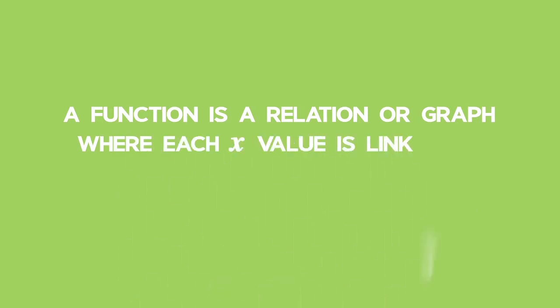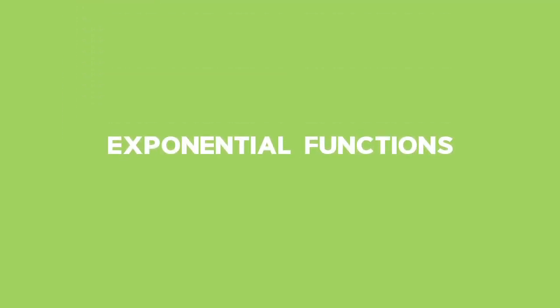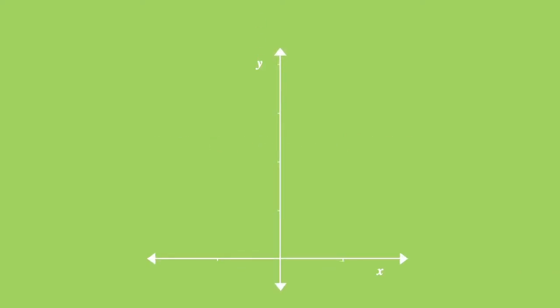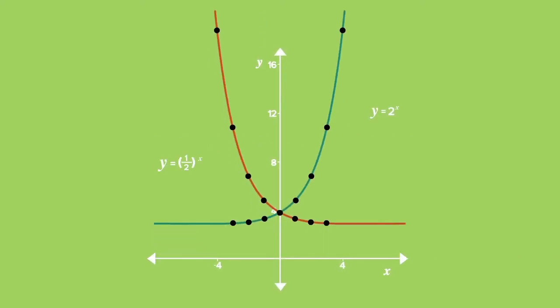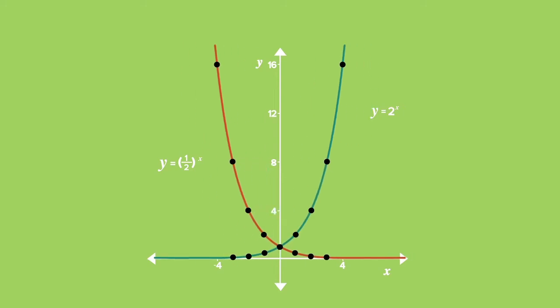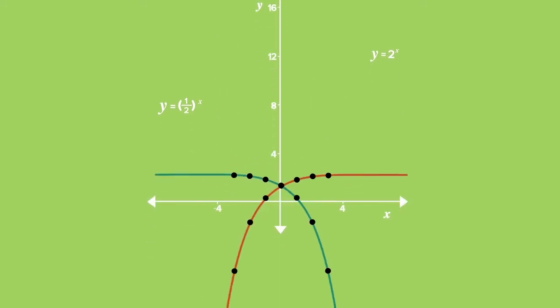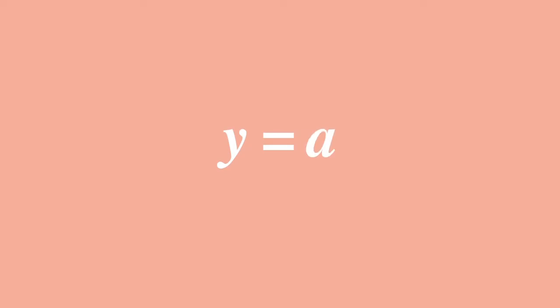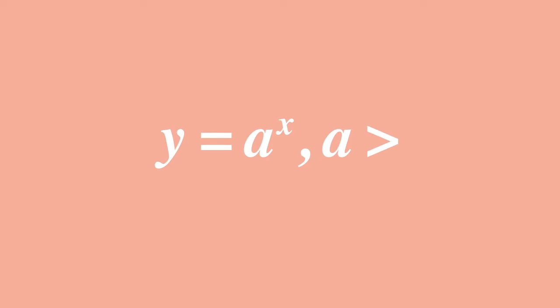Recall that a function is a relation or graph where each x value is linked to only one y value. Graphs that model exponential growth are called exponential functions. As with any graph, the exponential graph can be shifted vertically or horizontally, stretched or shrunk, and reflected. The defining equation of an exponential function is y equals a to the power of x, where the base a is greater than zero.